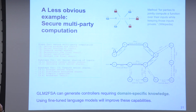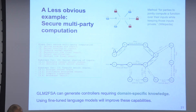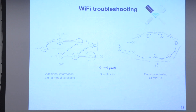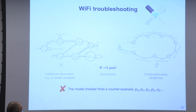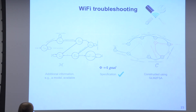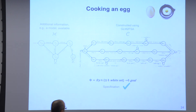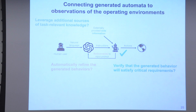Beyond the obvious cross-the-road example, we tried a couple of others. We got a secure multiparty computation protocol out of these interactions. For Wi-Fi troubleshooting, it was able to get one that passed specifications in a couple of iterations. We also did cooking an egg — I am not good at this, so I don't know if this controller could help me make better eggs — but a bunch of little examples to validate the approach.